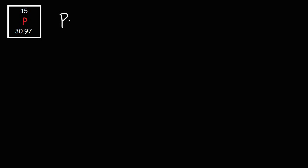Now let's move on to our next example: the phosphide ion, P3-. Going back to the last example, magnesium had an atomic number of 12. As an atom, it has 12 protons and 12 electrons — atoms are electrically neutral, so the number of protons and electrons are the same. That's why the sum of the exponents added to 12; it has 12 electrons.